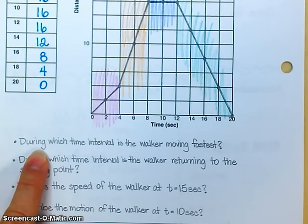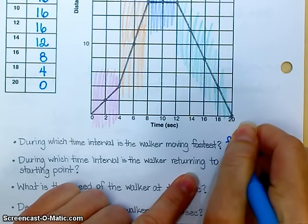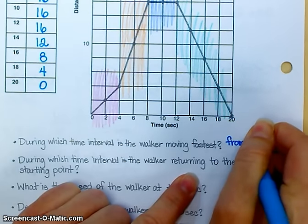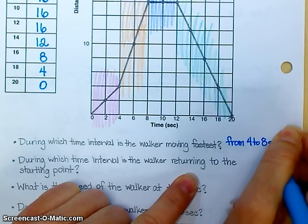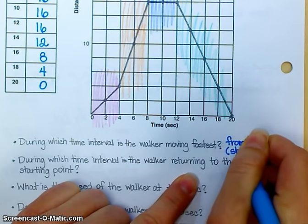First of all, during which time interval is the walker moving fastest? From 4 to 8 seconds. How do you know? Good. You look for the steepest slope.